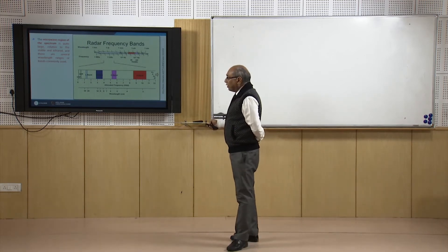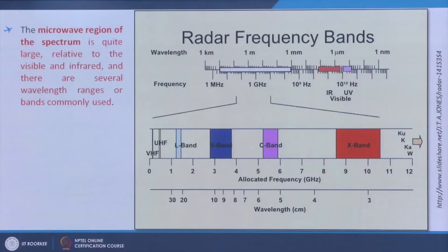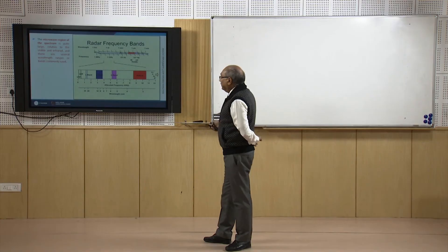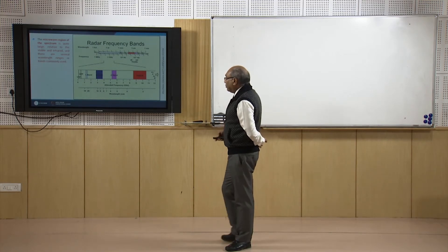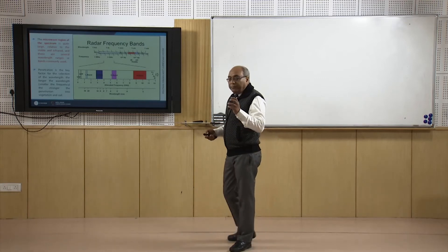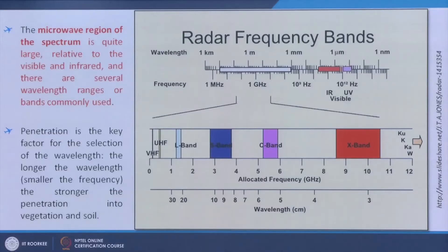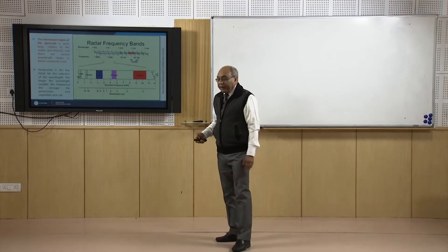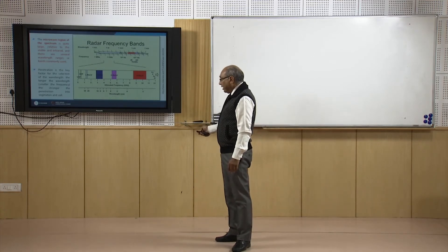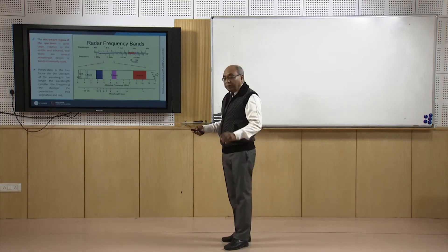The microwave region of the spectrum is quite large — from 1 centimeter to 1 meter — much larger than the visible and infrared. The main advantage is penetration. Penetration is the key factor for selecting the wavelength band, whether C band or X band, depending on requirements. The longer the wavelength, the smaller the frequency and the stronger the penetration into vegetation and soil, especially dry vegetation and sand.